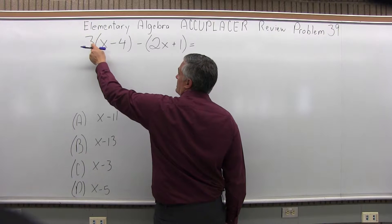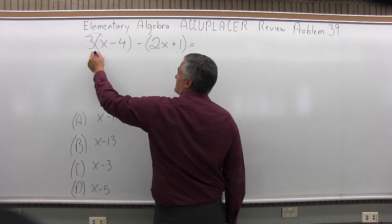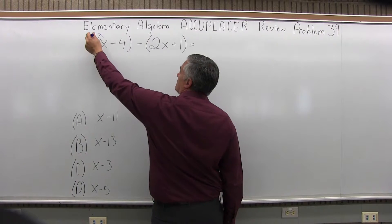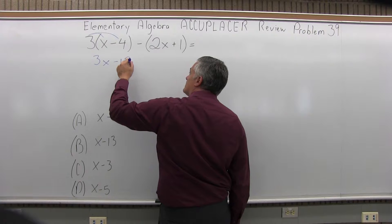So we'll start with 3 times x minus 4. I'm going to go 3 times x is 3x, 3 times negative 4 is negative 12, pay attention to the sign.